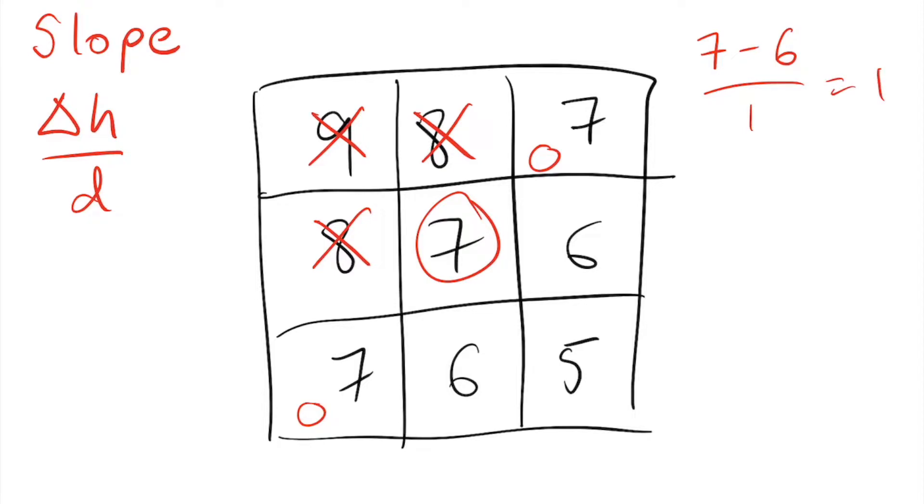Finally, for its neighbor with an elevation of 5, we need to consider that the distance between the cells is the square root of 2, and so the slope is given by 7 minus 5 divided by the square root of 2, which is also equal to the square root of 2, or about 1.41. Since the downward slope is steepest in the direction of this last neighbor, the flow direction is assigned towards it.